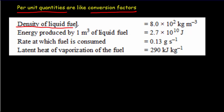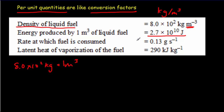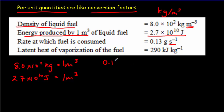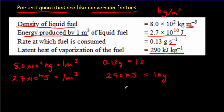Density of a fuel is a per-unit quantity — it tells you kilograms per meter cubed. So 8.0 times 10 squared, that is 800 kilograms, is equivalent to one meter cubed. The energy produced per meter cubed of liquid fuel — 2.7 times 10 to the tenth joules — is equivalent to one meter cubed. Fuel consumption of 0.13 grams per second means those two are equivalent. Latent heat of vaporization: 290 kilojoules is absorbed per kilogram. All of these become conversion factors for dimensional analysis.